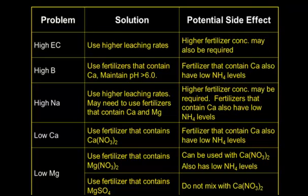Finally, for low magnesium: use fertilizers that contain magnesium nitrate, CalMag fertilizers, or magnesium sulfate — either of those are very good at supplying magnesium. If you're using calcium in conjunction with it, use magnesium nitrate with the calcium. If you don't have to use calcium, use magnesium sulfate.